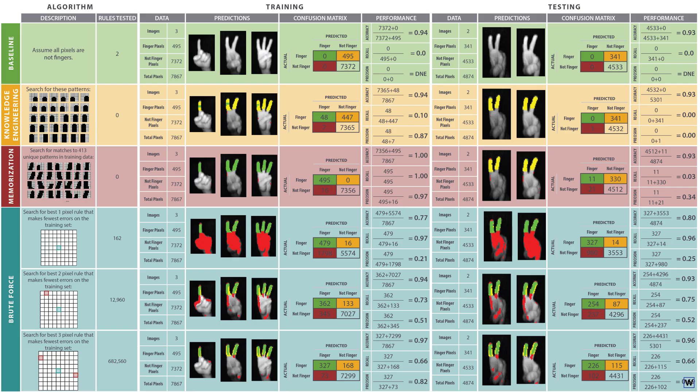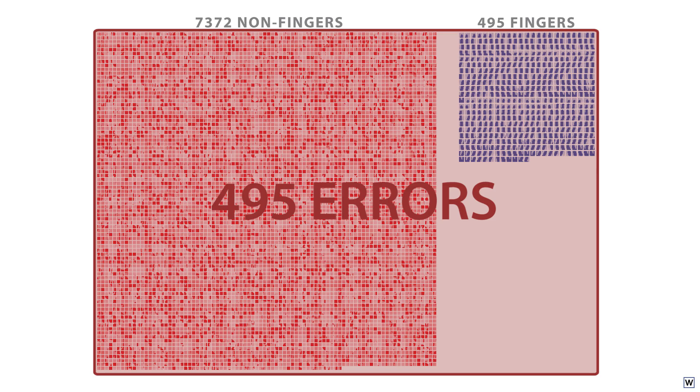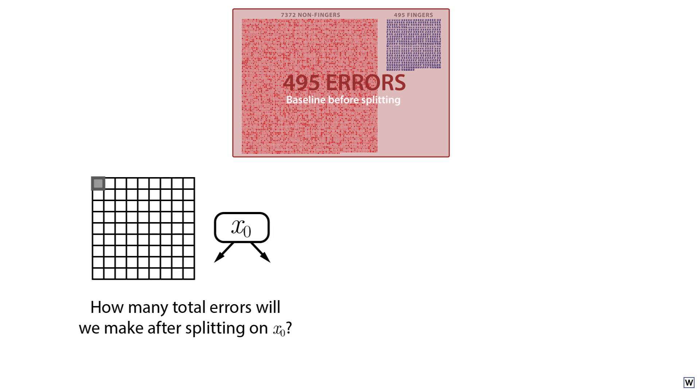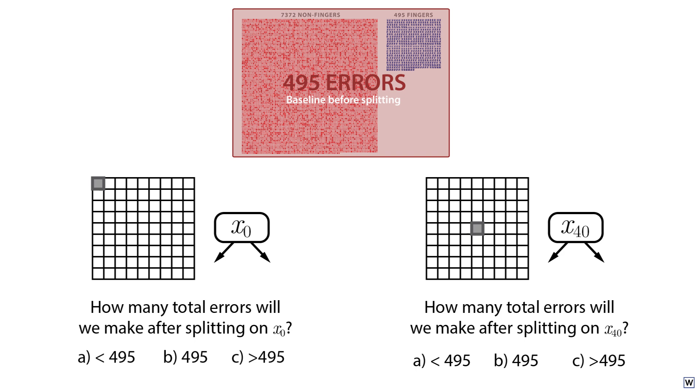Our new strategy depends on making fewer than this number of errors as a result of splitting on the right variable. Now, how do you think our approach will perform after splitting on a variable like X0? Will we do better, equal to, or worse than our baseline of 495 errors? What about a more central pixel like X40? We'll discuss the answers next time.